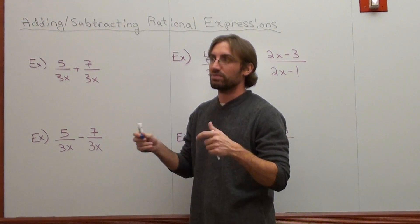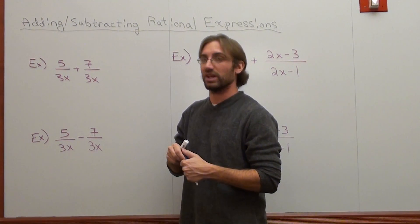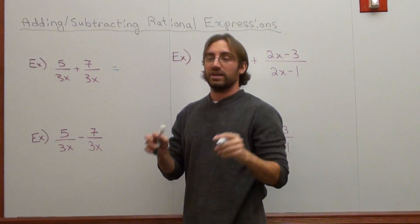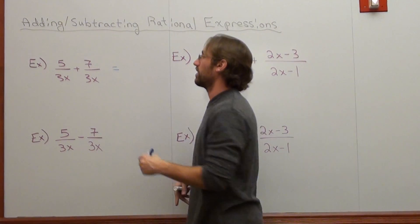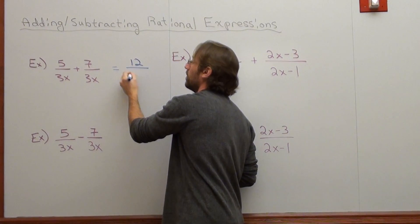When you're multiplying or dividing, you do what you're supposed to do, which is on the previous video lessons. But when you're adding and subtracting, if the denominators are the same, add the numerators. 5 plus 7 is 12 over 3x.